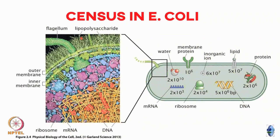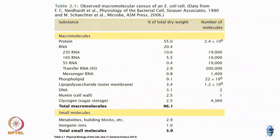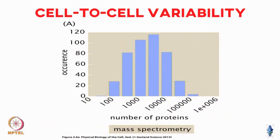If you are not accounting for crowding, you should at least realize that is an approximation subject to change. Crowding also leads to various other interesting effects like depletion forces, which we will talk about as the course progresses. This table from Rob Phillips gives the number of molecules of various species: transfer RNA, phospholipids, and so on.